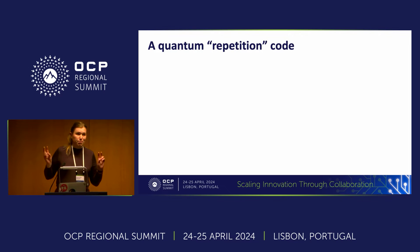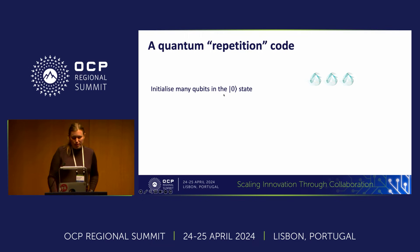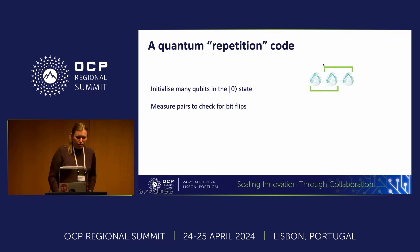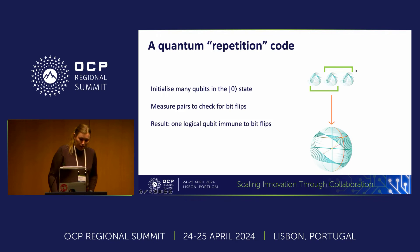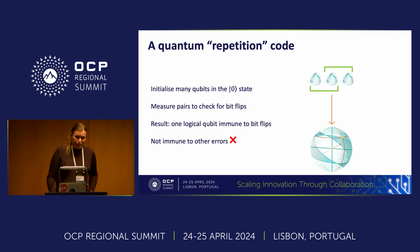How can we do a quantum repetition code in practice? Rather than repeating our quantum state multiple times, we choose an initial state to repeat — such as the zero state. We measure pairs of qubits to check for bit flips, not to learn the specific values, but just to learn whether the value of one qubit is different from another. The result is one logical qubit which is immune to bit flips, but it has the disadvantage of not being immune to other errors, such as the phase flips that Laurent mentioned.